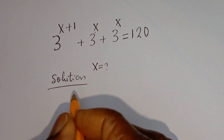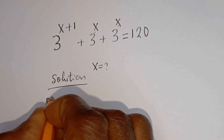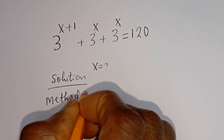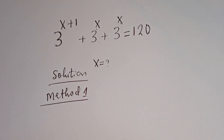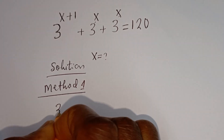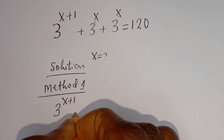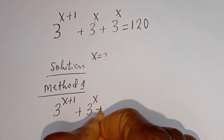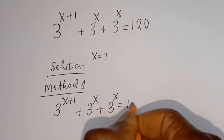We are going to solve this equation using two methods. Let's consider the first method, called Method 1. We have 3 to the power of S plus 1, plus 3 to the power of S, plus 3 to the power of S is equal to 120.